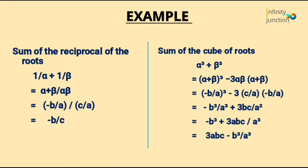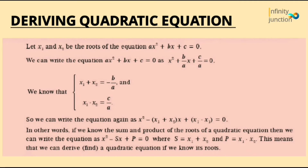Now we will see how to derive the quadratic equation. If you have two roots x₁ and x₂, or alpha and beta, for a quadratic equation Ax² plus Bx plus C equals to 0, you can rewrite this equation as x² plus B/A · x plus C/A equals to 0. The sum of roots gives minus B by A, and the product gives C by A. So you can rewrite the equation as x² minus (x₁ plus x₂)x plus x₁·x₂ equals to 0.